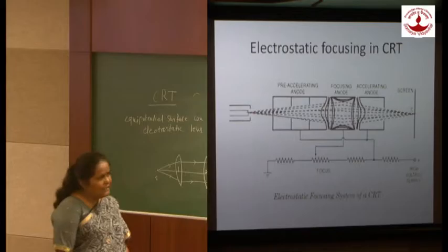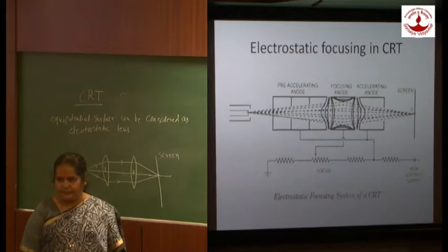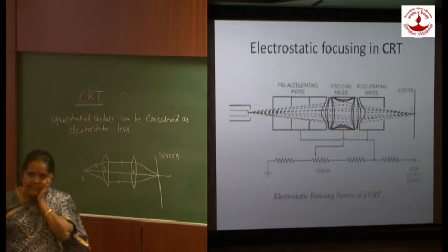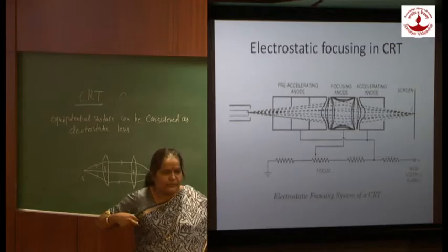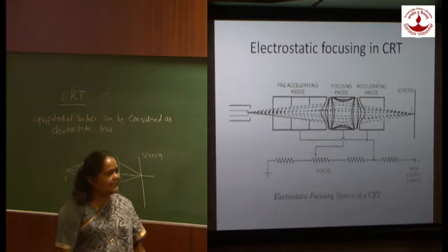Similarly, we can adjust the positive voltage on the accelerating and pre-accelerating anodes externally. This is done very rarely and is called astigmatism control. If the spot is not sharp or round, we use the astigmatism knob on the CRO to adjust the voltage on the accelerating and pre-accelerating anodes. However, since this voltage is very high — more than 1,000 to 2,000 volts — for normal focusing we simply use the focus knob, which ultimately adjusts the voltage on the focusing anode.